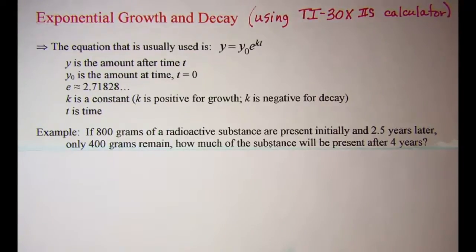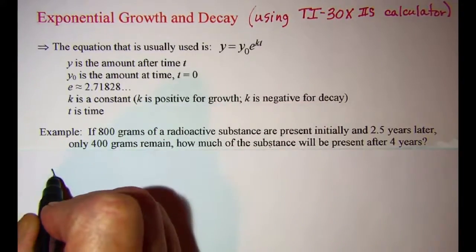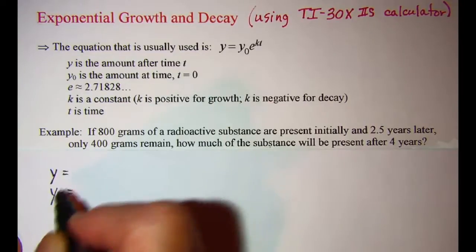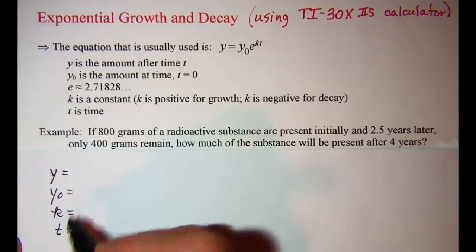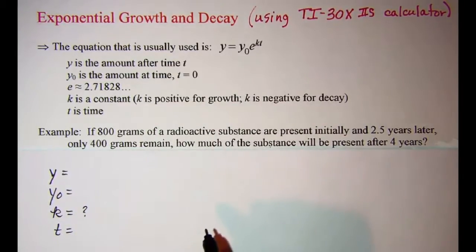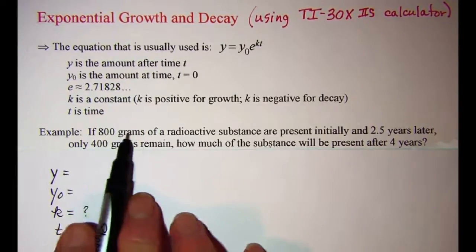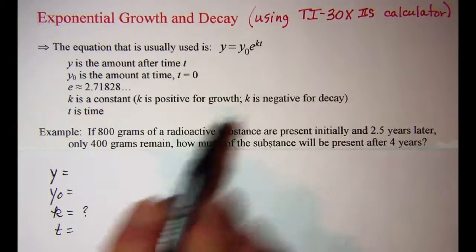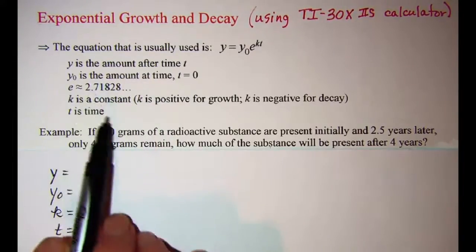The first step will be to find the value of k. So let's write down our variables y, y sub zero, k, and t. So our first step is to find k. We don't know what that is just yet. We have 800 grams present initially so that means at time t equals zero, y sub zero is 800.